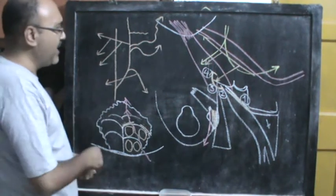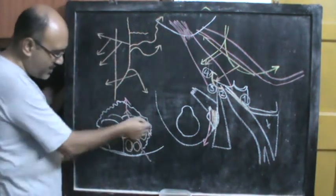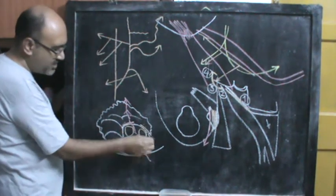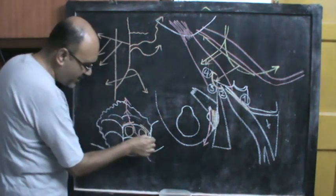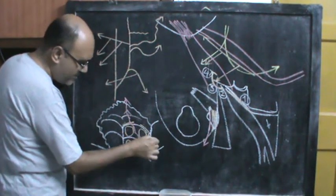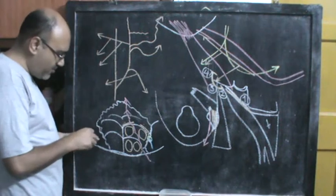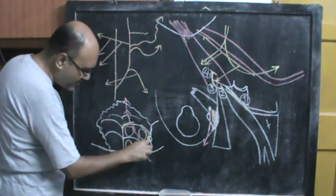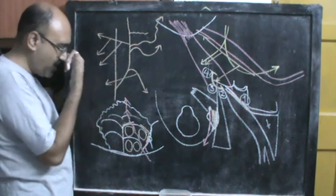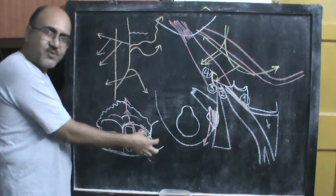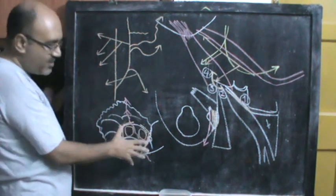One important branch of the occipital artery is the mastoid branch. Between the occipital bone and the mastoid part of the temporal bone there is a mastoid foramen through which passes the mastoid emissary vein. The mastoid branch of the occipital artery also passes through this mastoid foramen, entering the base of the skull to supply the mastoid air cells and the dura mater of the posterior cranial fossa.